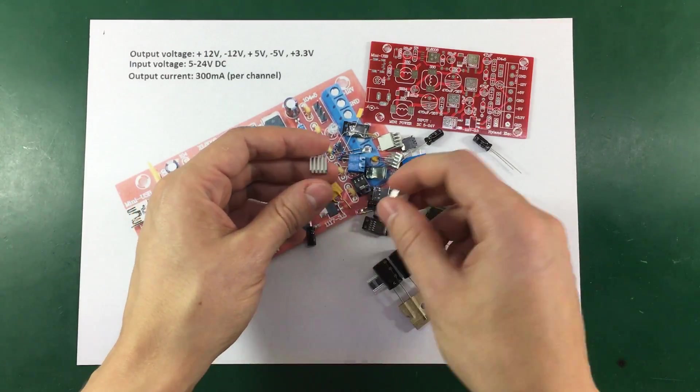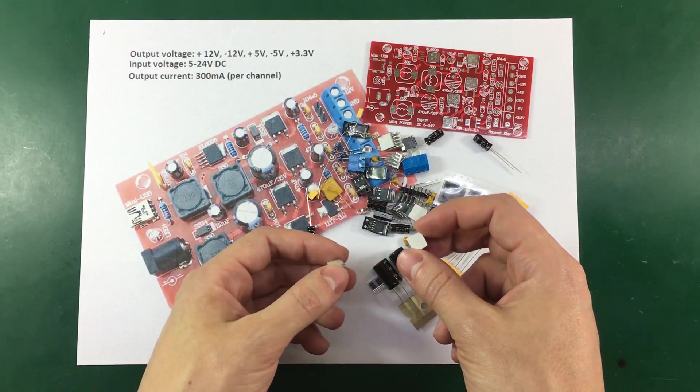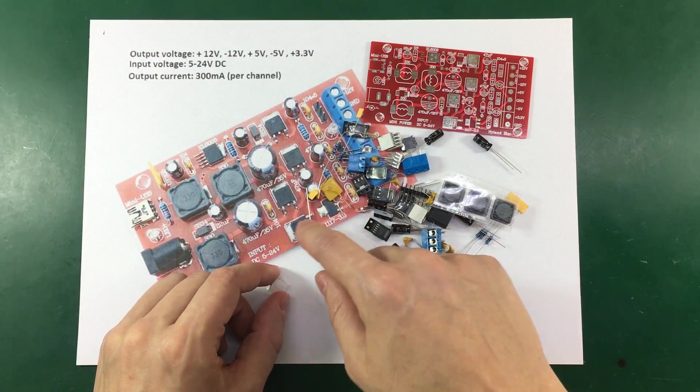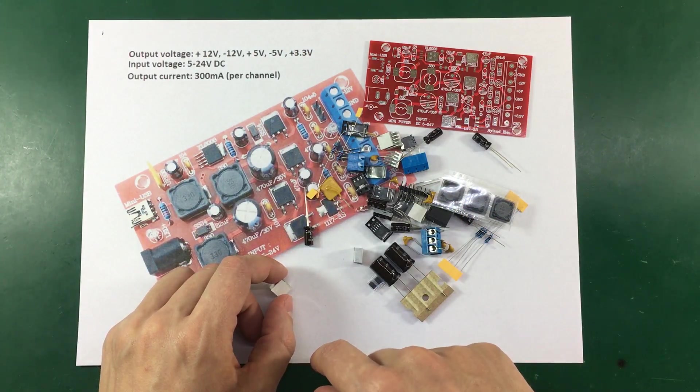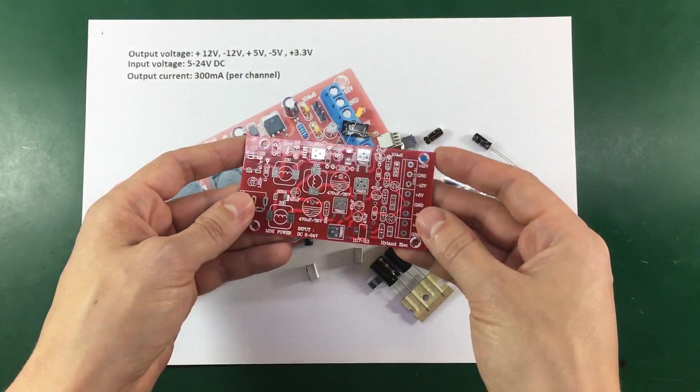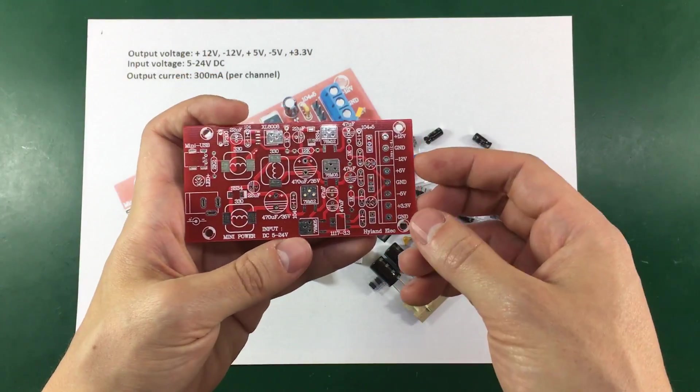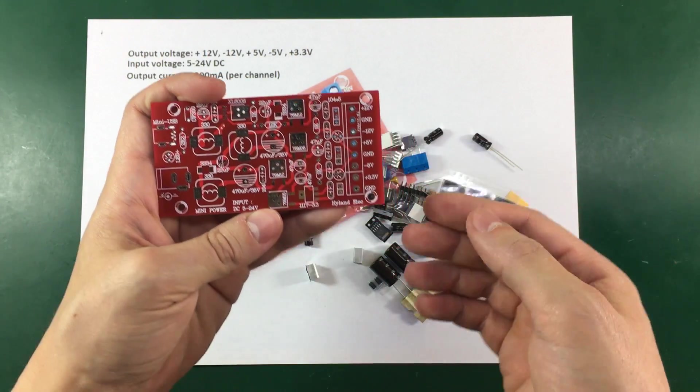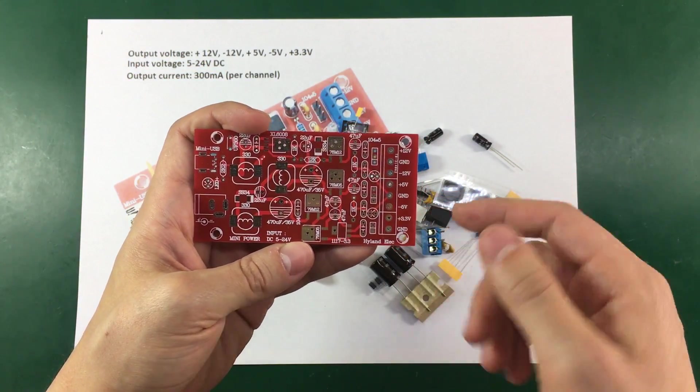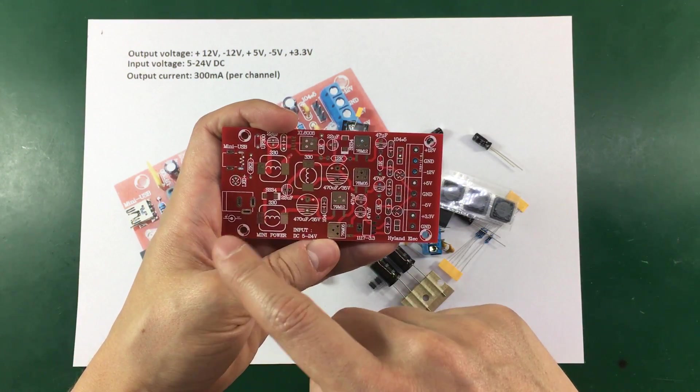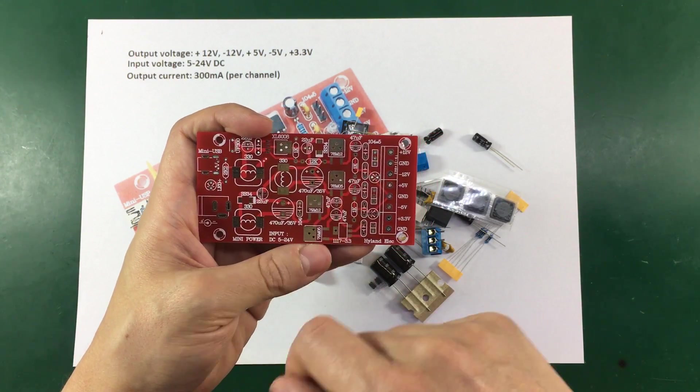We also got some small heat sinks which I'm guessing are supposed to go on each of these regulators. And as it's usual with these kits from eBay or even Banggood, you don't get any instructions.